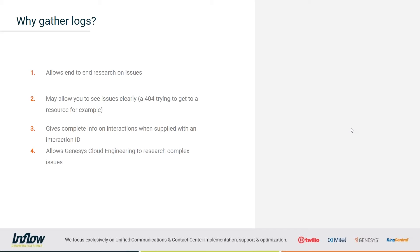The logs we're talking about today are the console and network logs, which are often asked for to help figure out what may be going on with a particular issue within Genesis Cloud. They allow the support staff at Genesis to take a look at the detailed events surrounding the issue at hand so they can understand what might be broken and attempt to fix it. These logs allow end-to-end research on issues and provide what's called a correlation ID for Genesis Cloud to track every occurrence through the system.